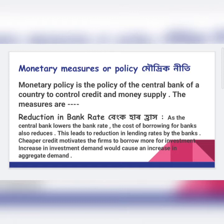The first monetary measure is reduction in the bank rate. If the central bank of an economy reduces its bank rate, commercial banks have to keep less amount of money with the central bank. So the money available with the commercial banks will increase, and it will increase the aggregate demand.